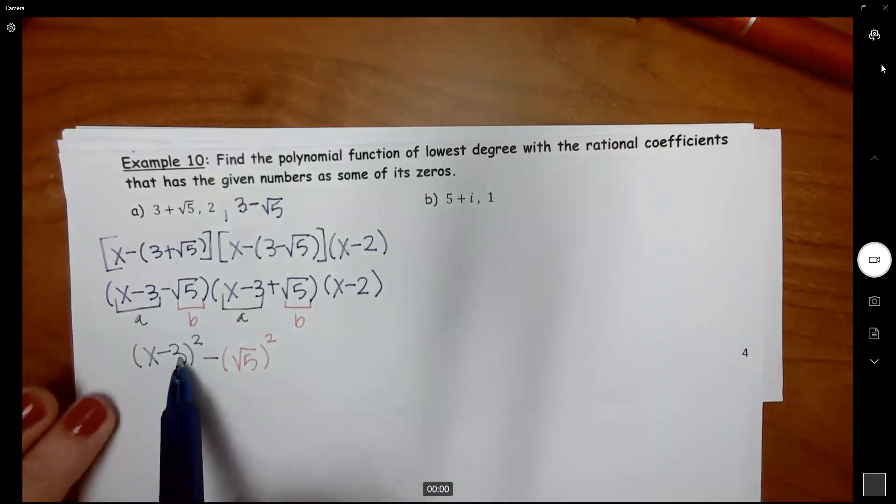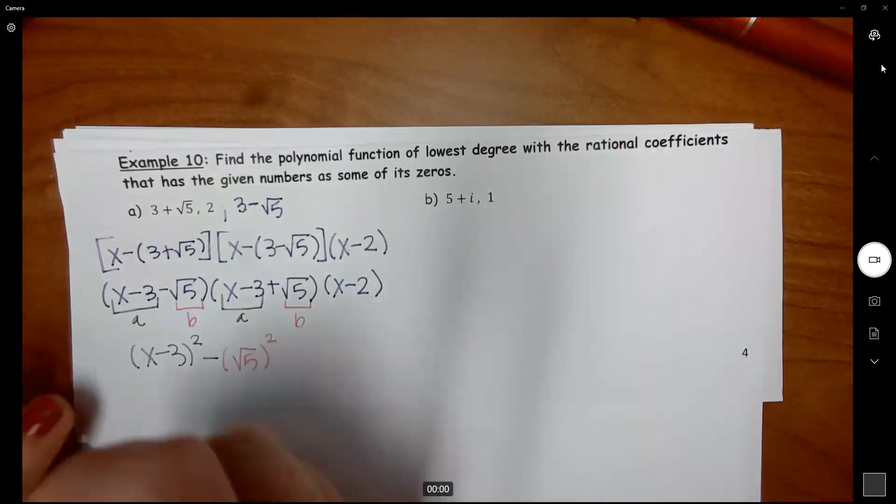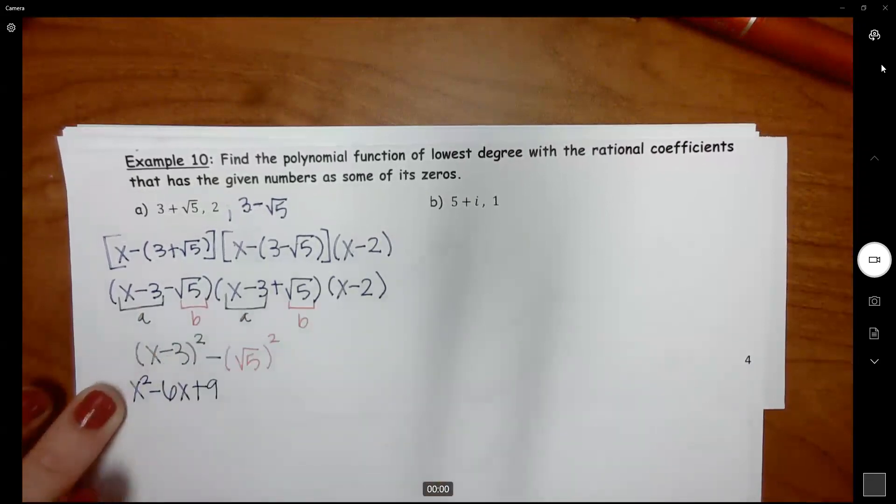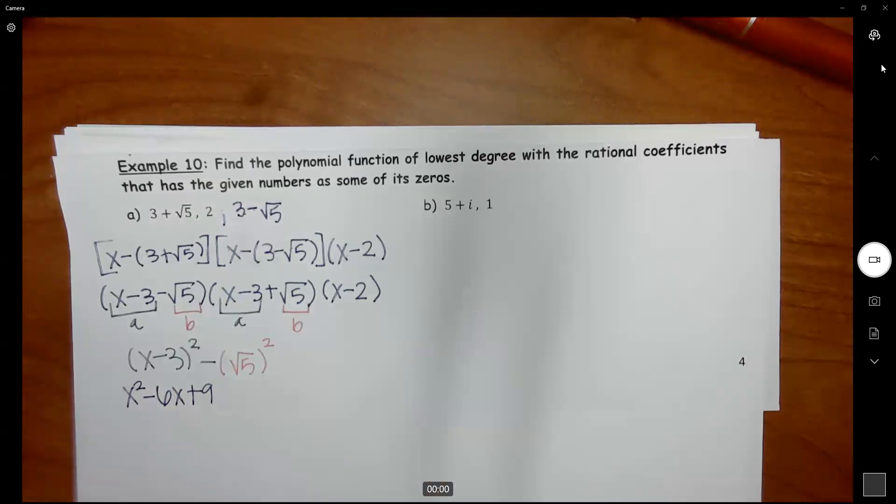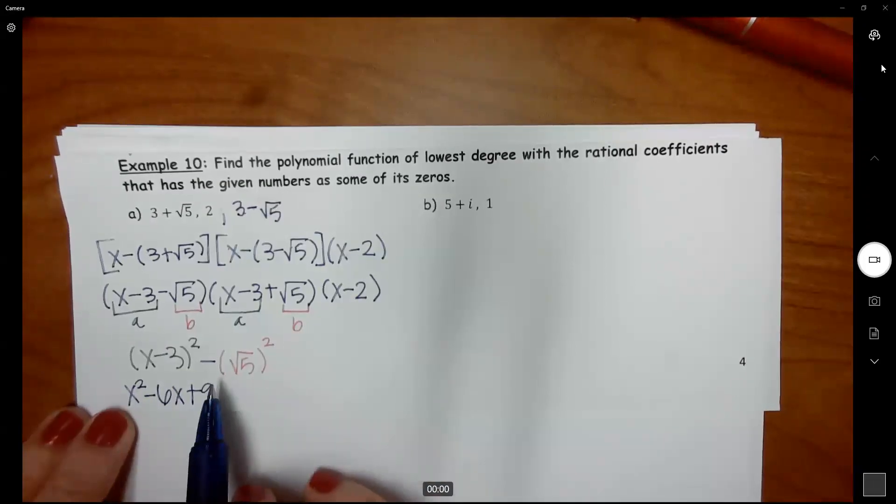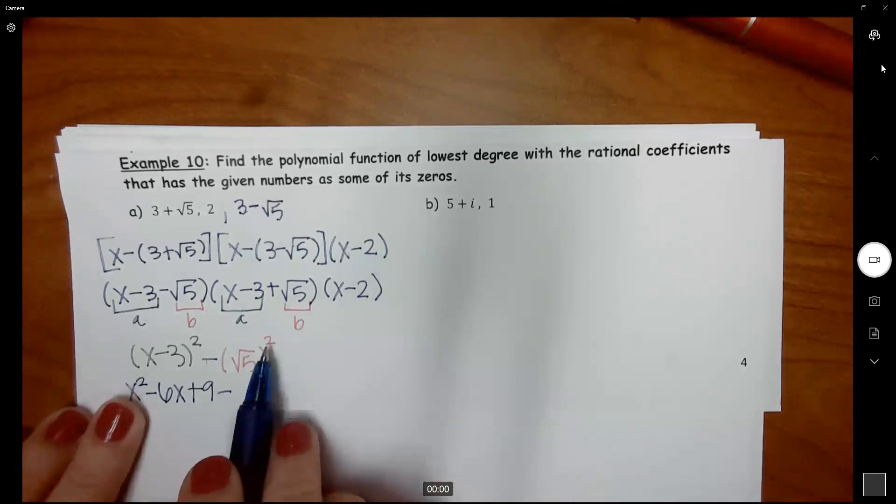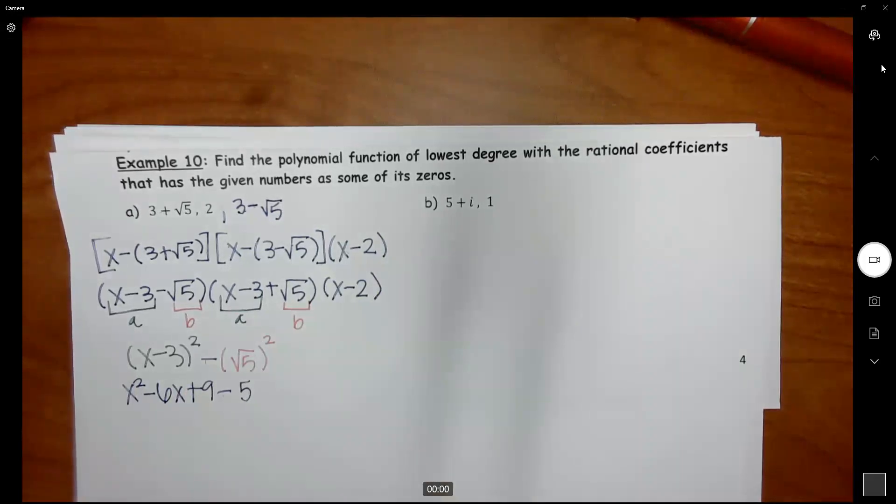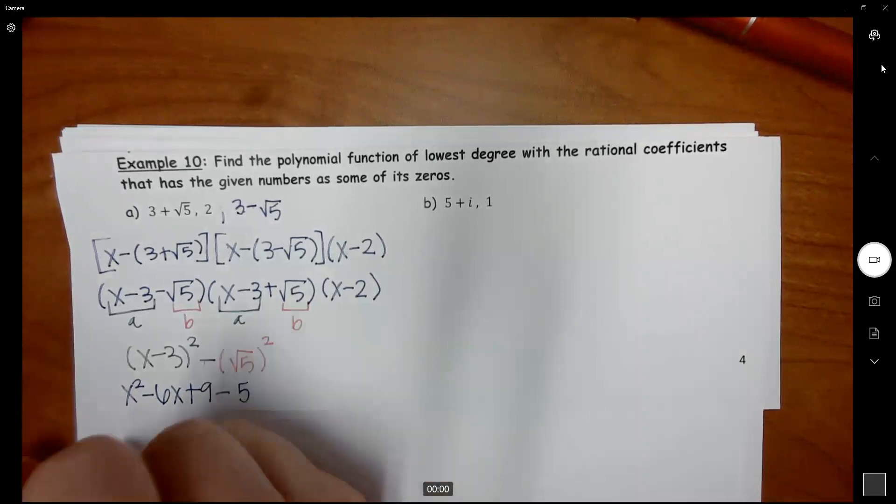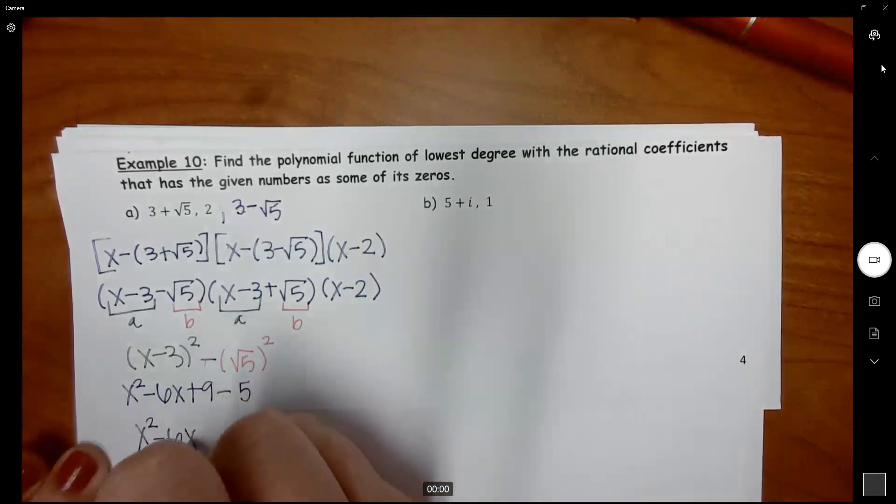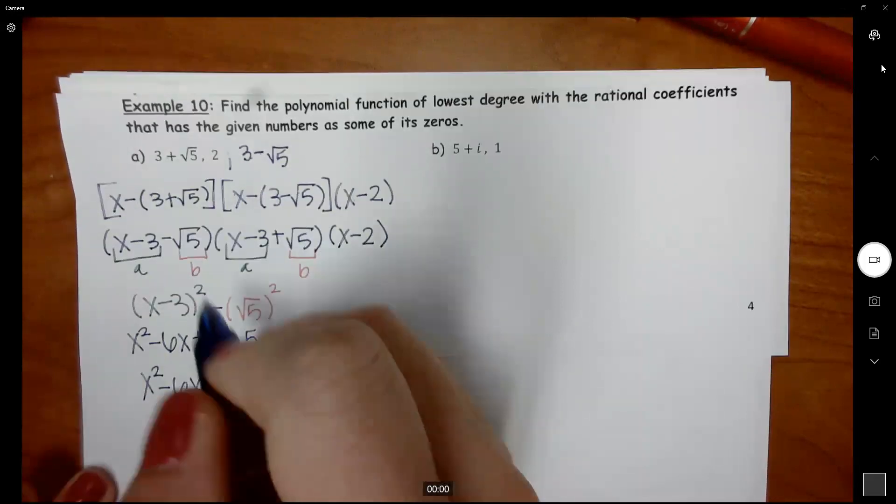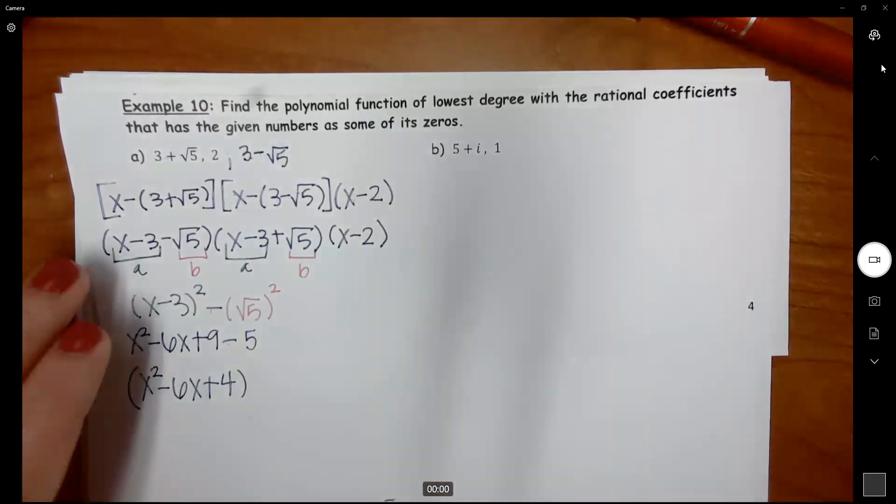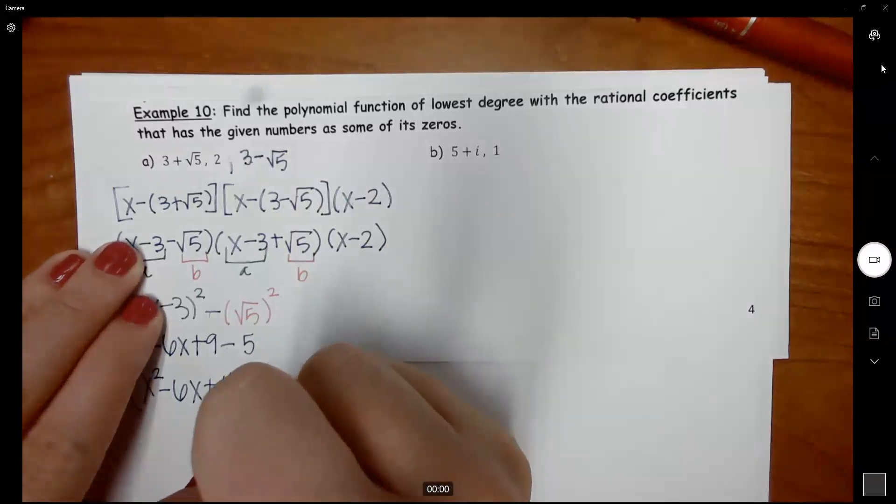Now just multiply out. X minus 3 squared is X minus 3 times X minus 3. You FOIL and we get X squared minus 6X plus 9, minus square root of 5 squared is just 5. So we simplify that and we've got X squared minus 6X plus 4.